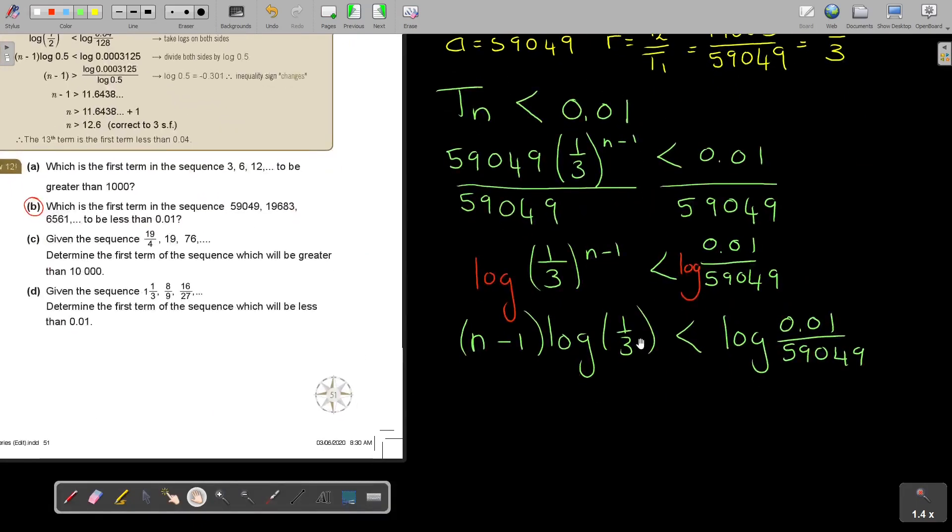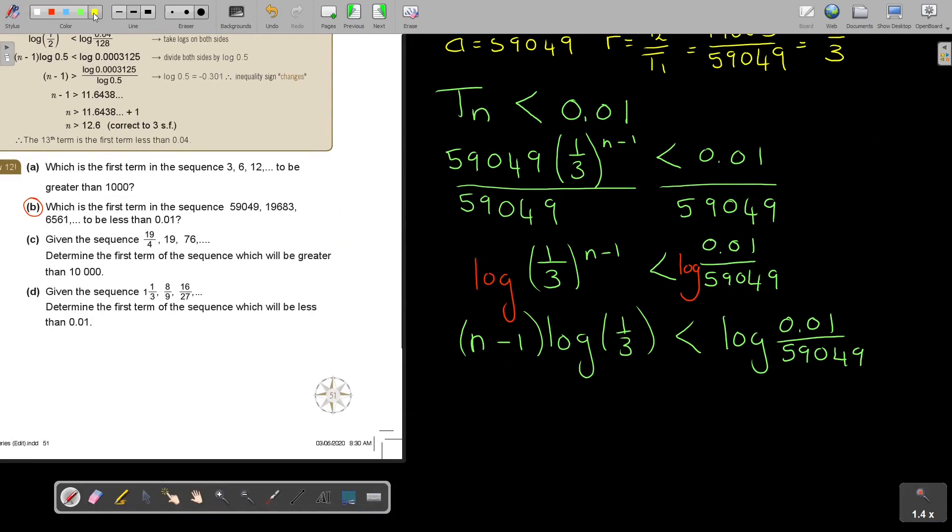You must first go and press this on a calculator. Now if you press this on a calculator, you will get that log 1 third is equal to negative 0.47712. But it's a negative. That's all that you are interested in. Because, as soon as you divide, because I'm going to now divide by log a third, and I want to divide by log a third, and just as soon as you divide, you must swap this sign. So that's why I want to prefer that we write it in the next step. So I divide, I divide. So I'm ending up with N minus 1, and now it's swap. Do you see? And I divide log 0.01 over 59049, divide log a third.